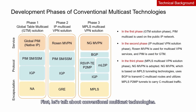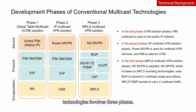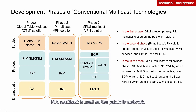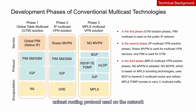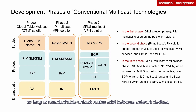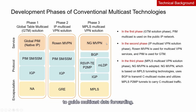Let's talk about conventional multicast technologies. The development of conventional multicast technologies involves three phases. In the first phase, the GTM solution phase, PIM multicast is used on the public IP network. PIM is independent of the type of unicast routing protocol used on the network, and as long as reachable unicast routes exist between network devices, it can establish an MDT to guide multicast data forwarding.